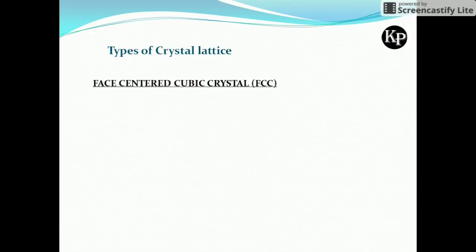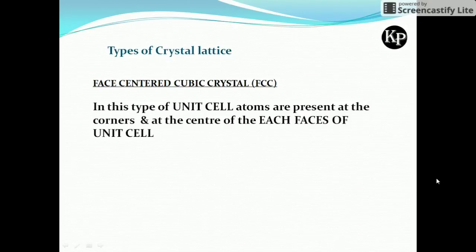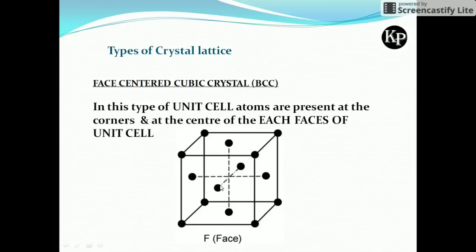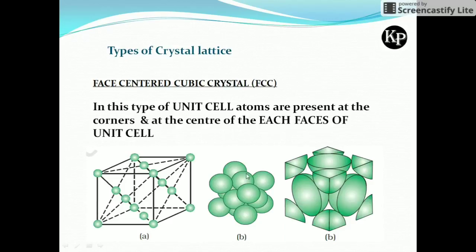The next type is the face centered cubic (FCC) crystal. In FCC, eight atoms are present at the eight corners, and at the center of each face one atom is present. See the figure — atoms are at all corners, and also at the center of each face. There are six faces, so six atoms are at the face centers, and eight atoms at eight corners. In total, fourteen atoms are present in this type of cubic crystal.